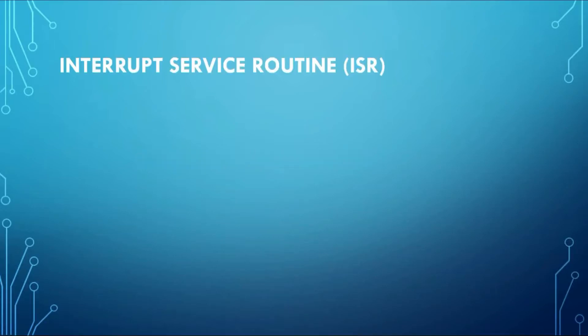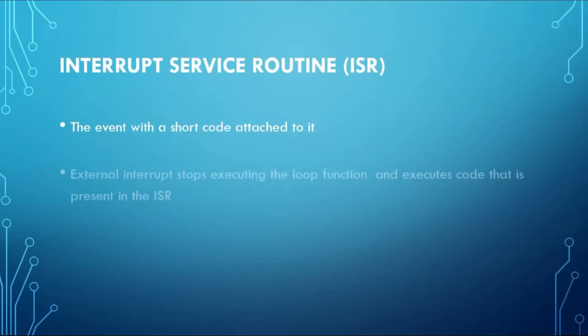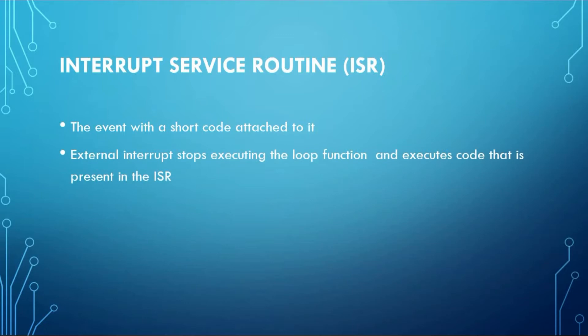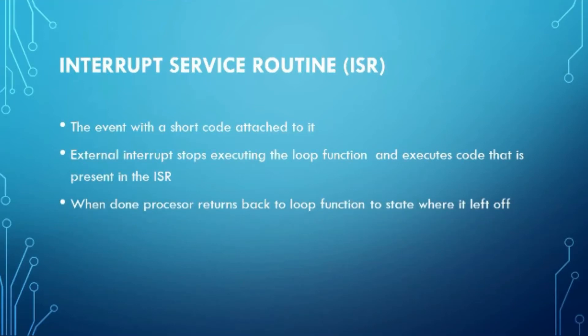An ISR is an event with attached code that reacts to changes on the interrupt pin. An external interrupt stops executing the loop function and executes the code that is present in the ISR. When the ISR code is executed, the processor returns back to the loop function to the state where it left off.